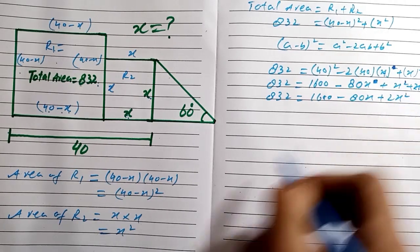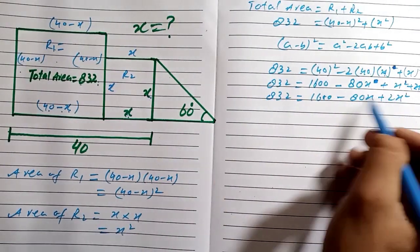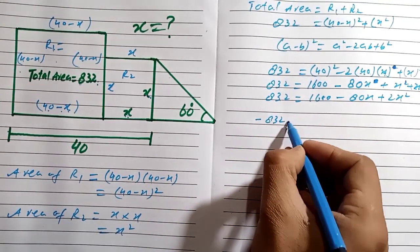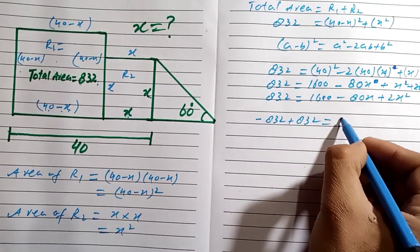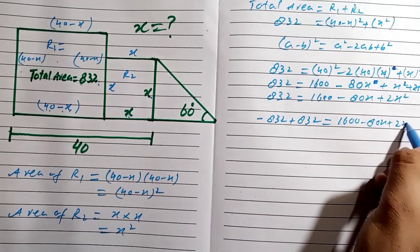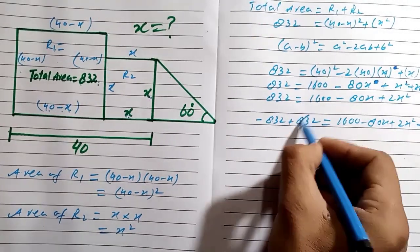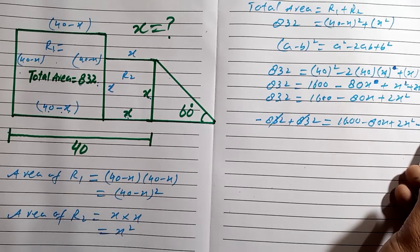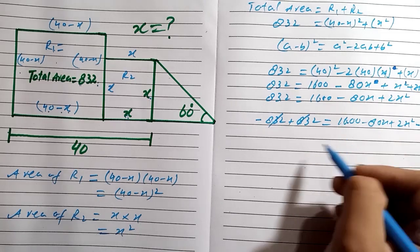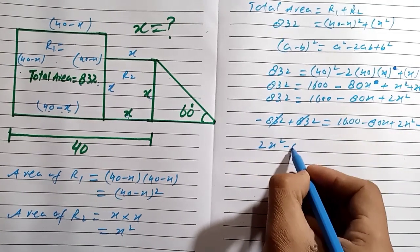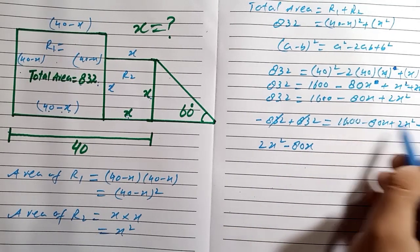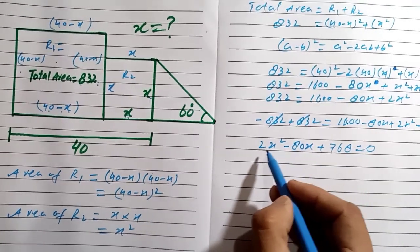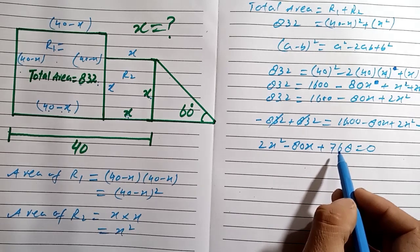We have two x squared terms which combine to give 2x squared. Subtracting 832 from 1600 gives 768. Rearranging, the equation becomes 2x squared minus 80x plus 768 equals 0, which is a quadratic equation.